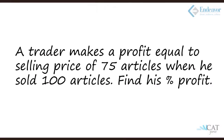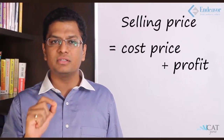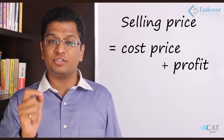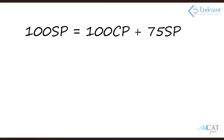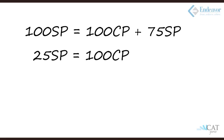Another example: A trader makes a profit equal to the selling price of 75 articles when he sells 100 articles. Find his profit percentage. Total selling price of 100 articles = 100·SP. This equals 100·CP plus the profit, where profit = 75·SP. So 100·SP = 100·CP + 75·SP, giving 25·SP = 100·CP, meaning SP/CP = 4. Therefore the profit percentage is 300%.